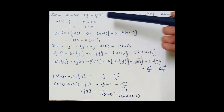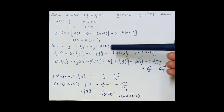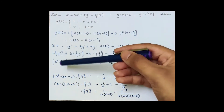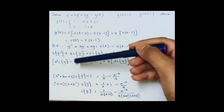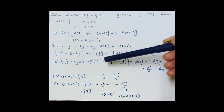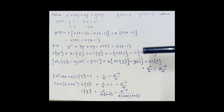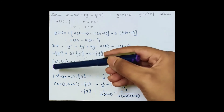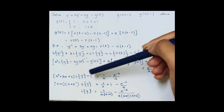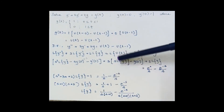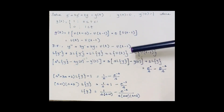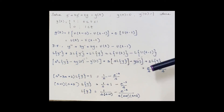Substituting into the equation: y'' + 3y' + 2y = u(t) − u(t − 1). Applying the Laplace transform: L{y''} + 3·L{y'} + 2·L{y} = L{u(t)} − L{u(t−1)}. The second derivative term gives s²·L{y} − s·y(0) − y'(0), and the first derivative gives s·L{y} − y(0). The right side uses L{u(t−a)} = e^(−as)/s.